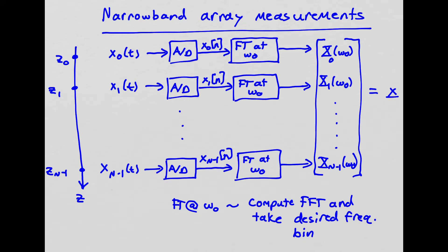The thing I want to point out here is this box that says Fourier transform at omega 0. Really, in a practical scenario, what we're going to do is compute, probably using the FFT, the fast Fourier transform. We compute the FFT and then we take just one bin at the desired frequency. And that's what we store in this narrowband measurement vector x.